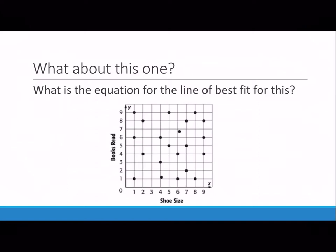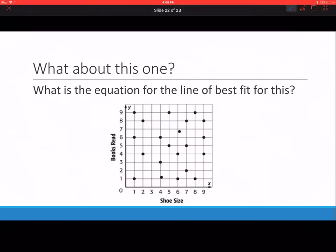For the last graph on your notes page, what is the equation for the line of best fit for this? If you see something like this, you have to immediately say there is no line of best fit for this scatterplot. There is no association for the relationship between these points. You cannot assume that a line of best fit can be written. You will need to write a response that says because there is no relationship between the number of books read and the shoe size, a line of best fit cannot be written. There cannot be an equation for the line.